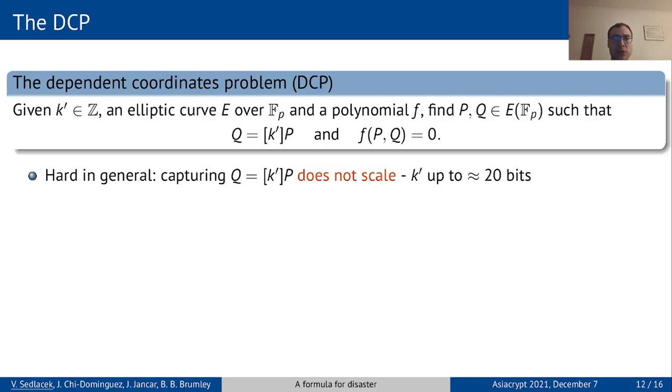We managed to solve some new cases, for example when K' can be represented as a ratio of two small numbers modulo the curve order. Unfortunately, such numbers are rare enough, it does not really help the attacks.